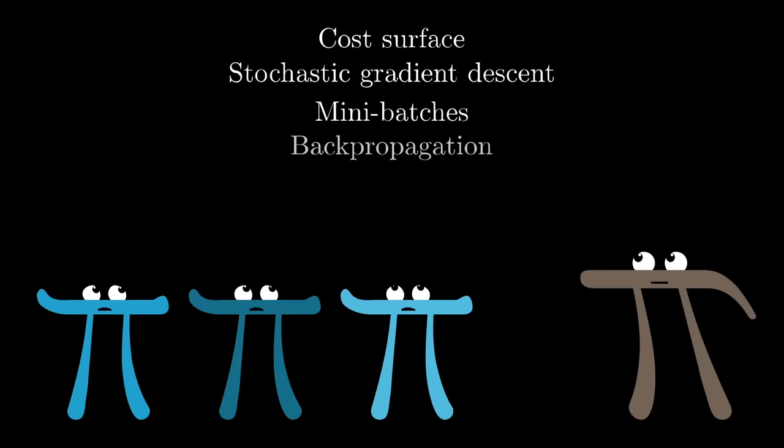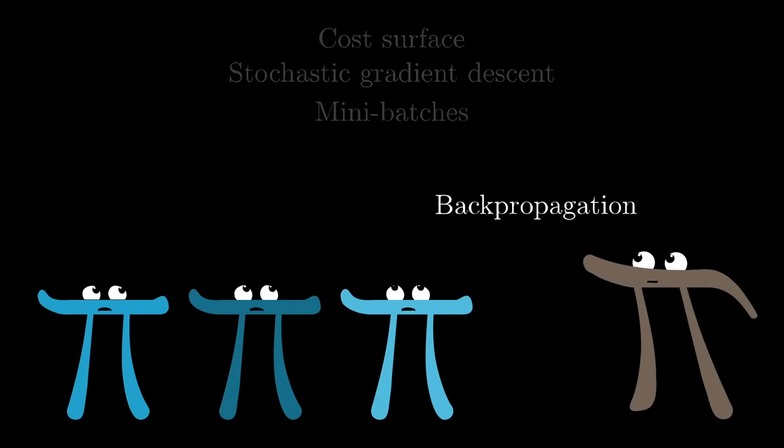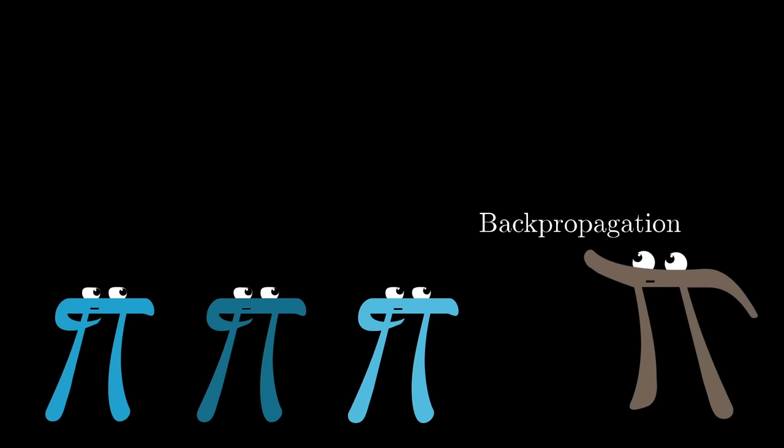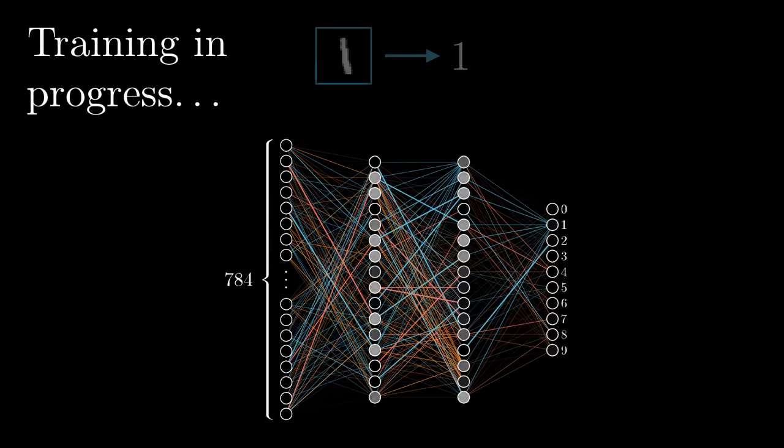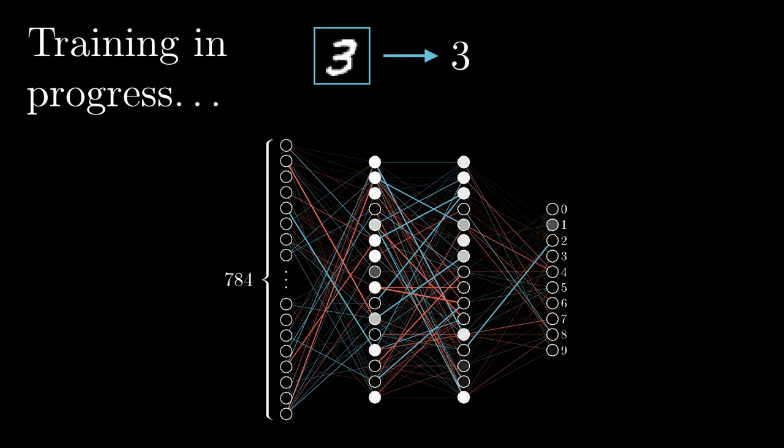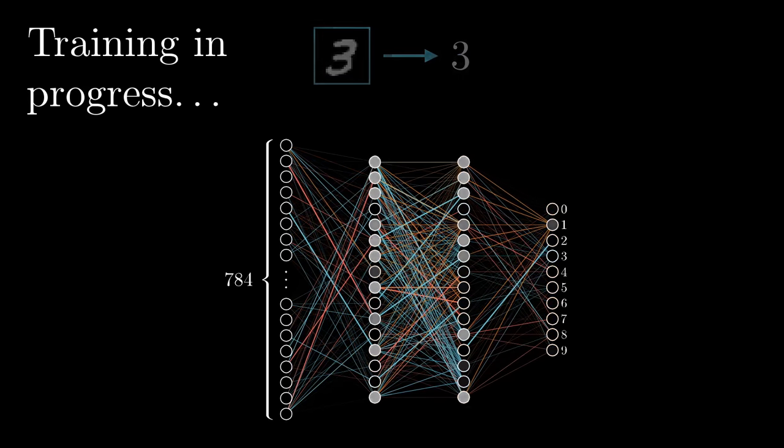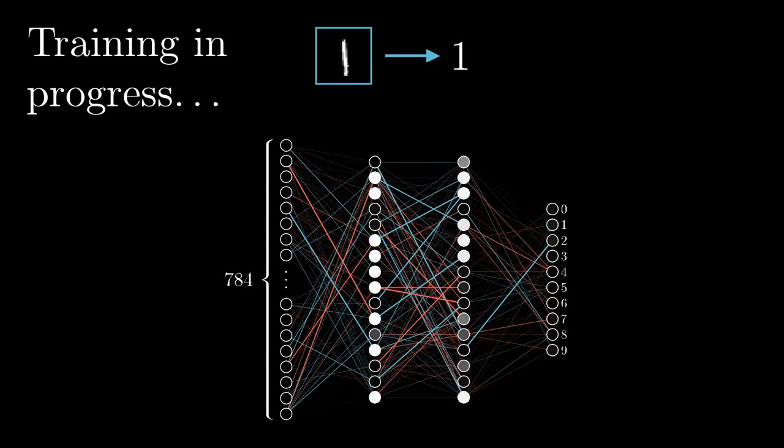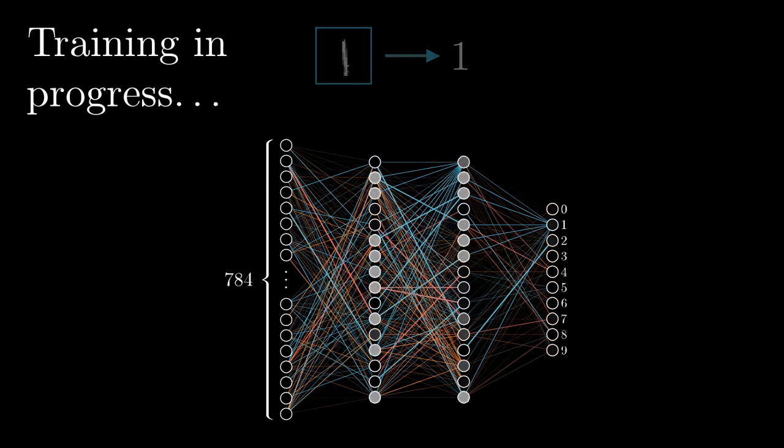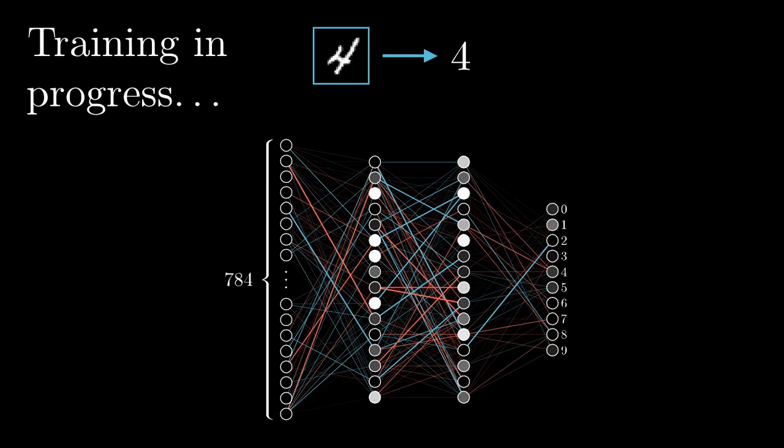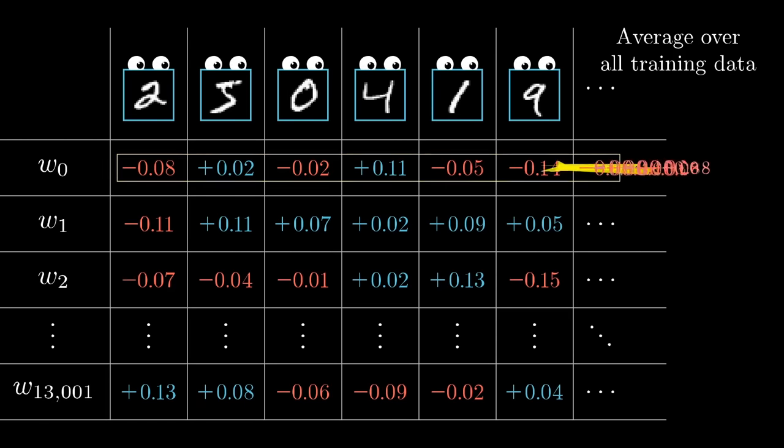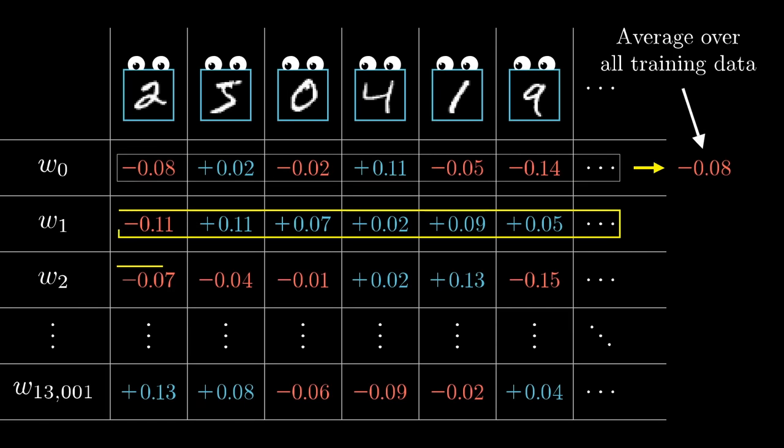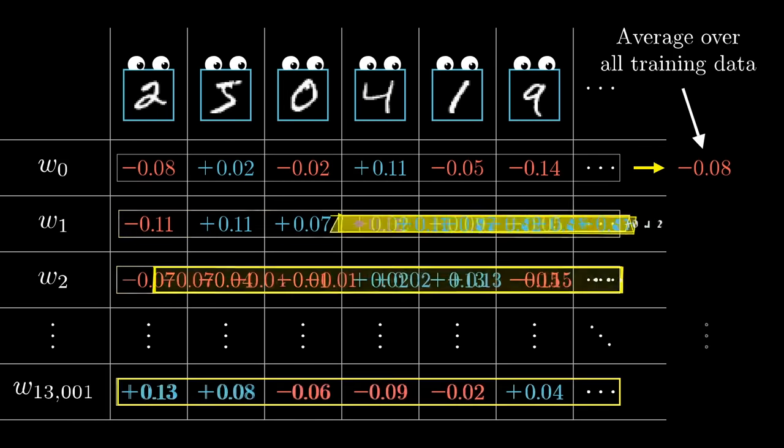There's kind of a lot going on here, so let's just sum it up for ourselves, shall we? Backpropagation is the algorithm for determining how a single training example would like to nudge the weights and biases, not just in terms of whether they should go up or down, but in terms of what relative proportions to those changes cause the most rapid decrease to the cost. A true gradient descent step would involve doing this for all your tens and thousands of training examples and averaging the desired changes that you get.